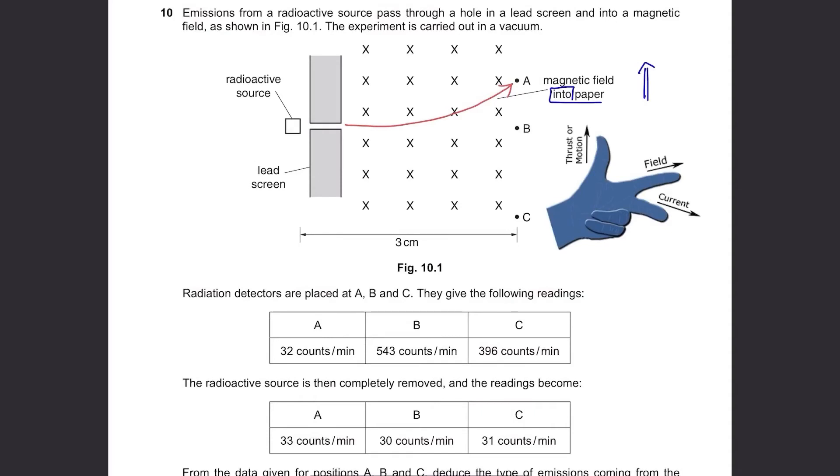For beta particles, they travel in the opposite way of alpha particles as they are negatively charged. So they will travel in this way. For gamma rays, they are not affected by the magnetic field, so they will travel in a straight line. From these, we know that at A, alpha particles will be detected, at B, gamma rays will be detected, and at C, beta particles will be detected.